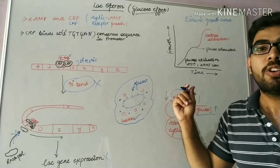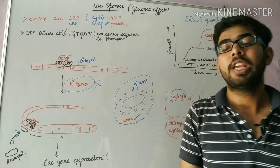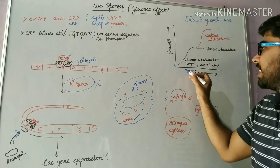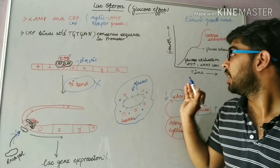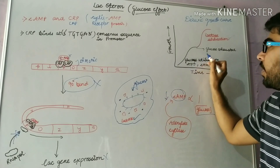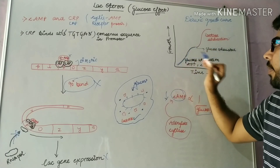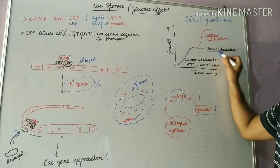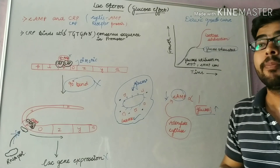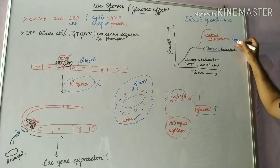A diauxic growth curve is observed when both lactose and glucose are provided to E. coli in the media. The y-axis represents growth of E. coli and the x-axis represents time. First of all, glucose utilization occurs in E. coli, as depicted by the black line. Once all of the glucose is consumed from the surroundings, then the lac operon gene will express and lactose utilization occurs.